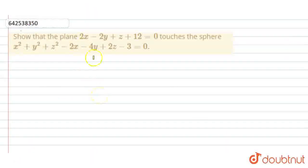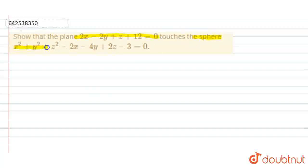Hi there. Today our question is: show that the plane 2x minus y plus z plus 12 equals 0 touches the sphere x squared plus y squared plus z squared minus 2x minus 4y plus 2z minus 3 equals 0. So we have to show that this sphere touches the plane.